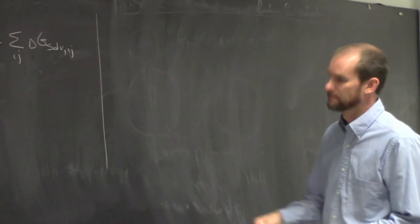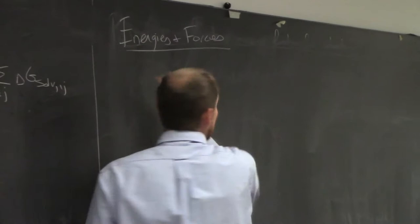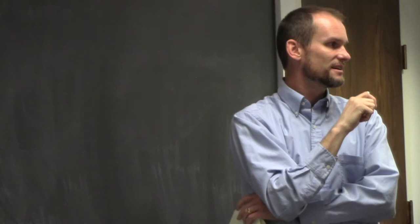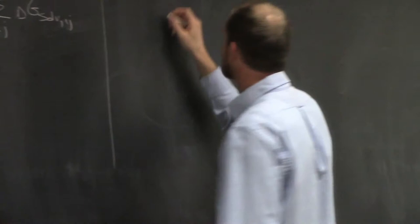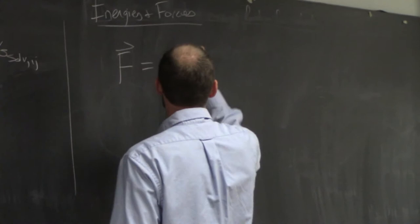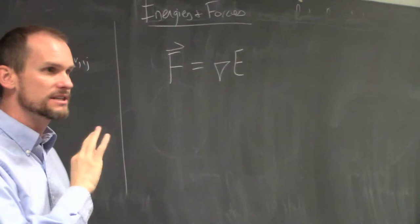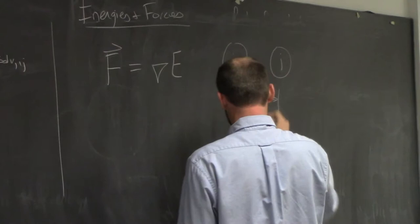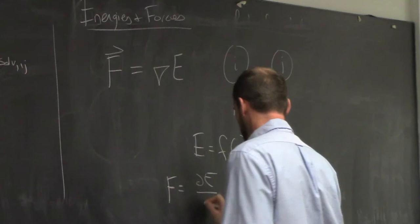The last thing to talk about is energies and forces. We've put a bunch of equations together for energies - if we know the energy, how do we get the force? Force is a vector. We take the gradient of the energy. If we have some equation for the total energy, we take the gradient and it gives the force with a direction. So if we have two atoms I and J some distance R apart, the force is the negative of the derivative of the energy dE/dR.